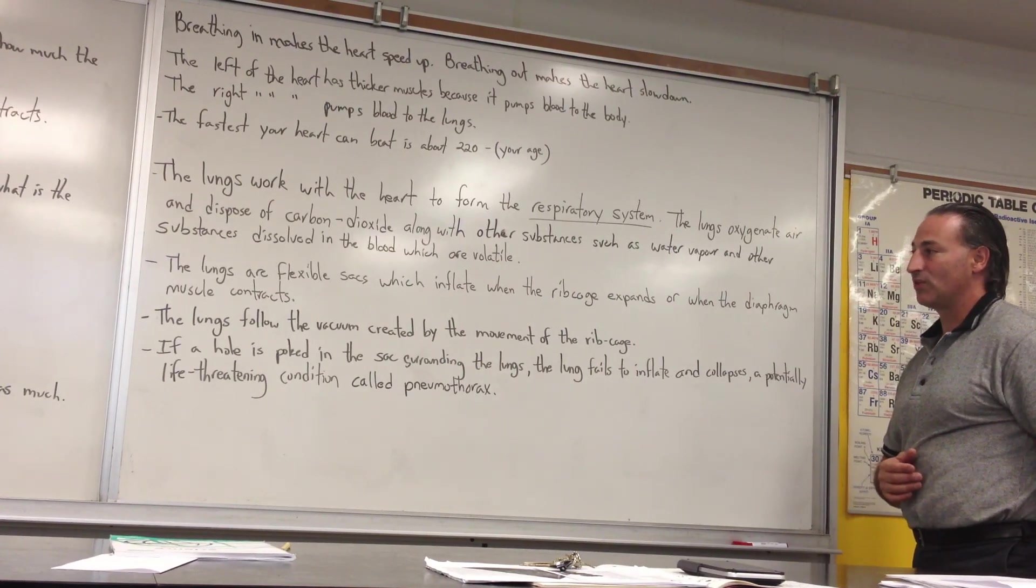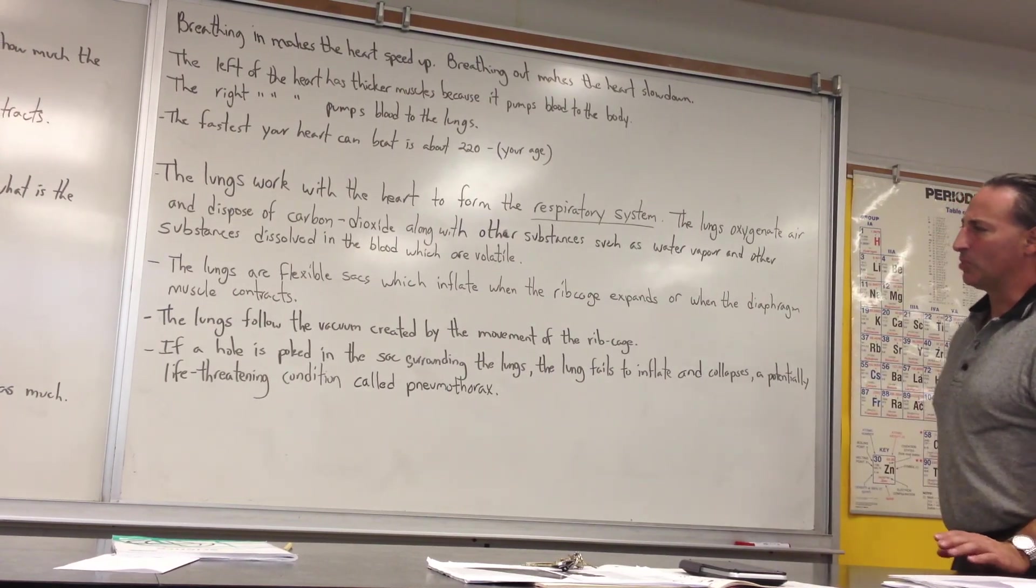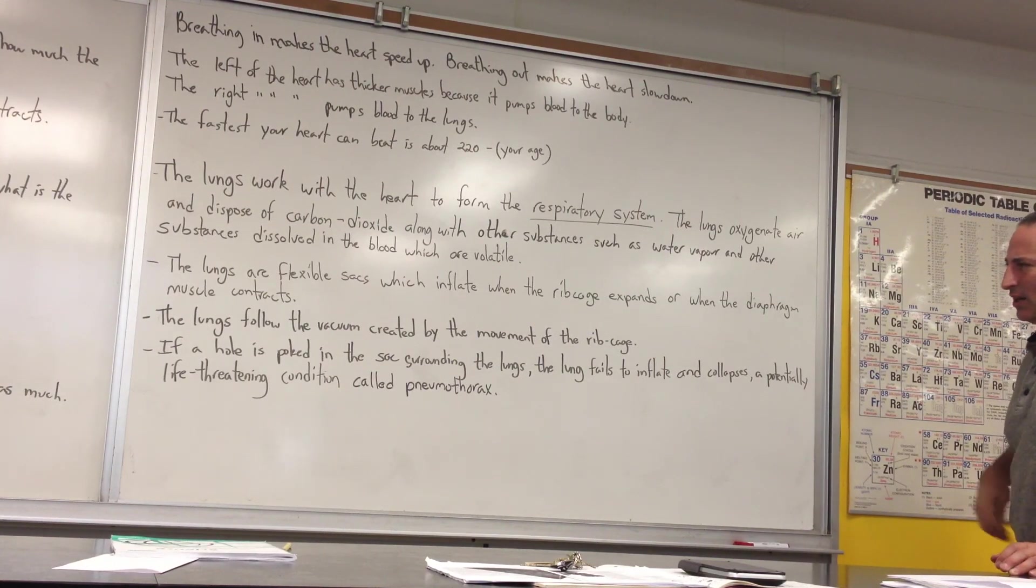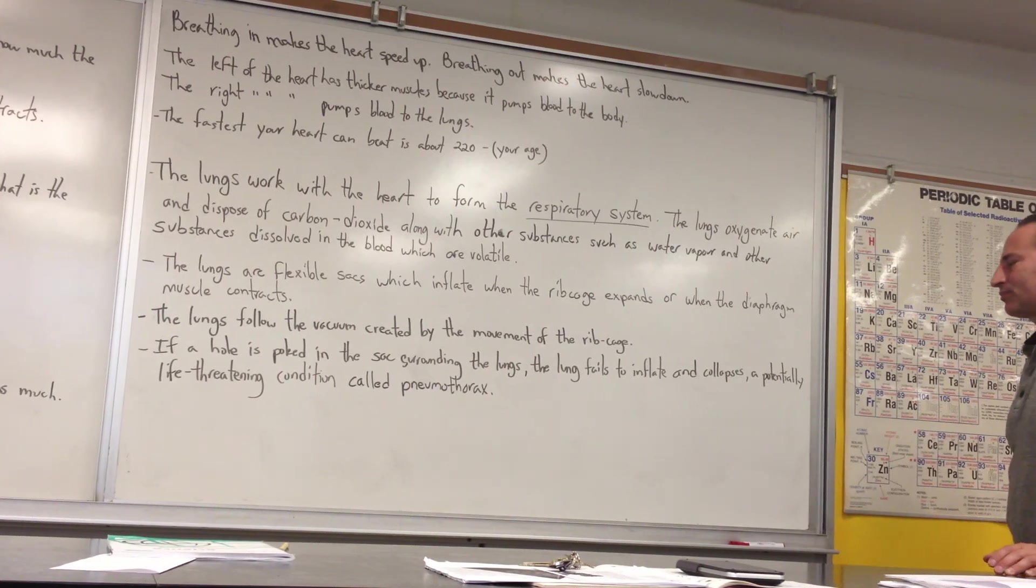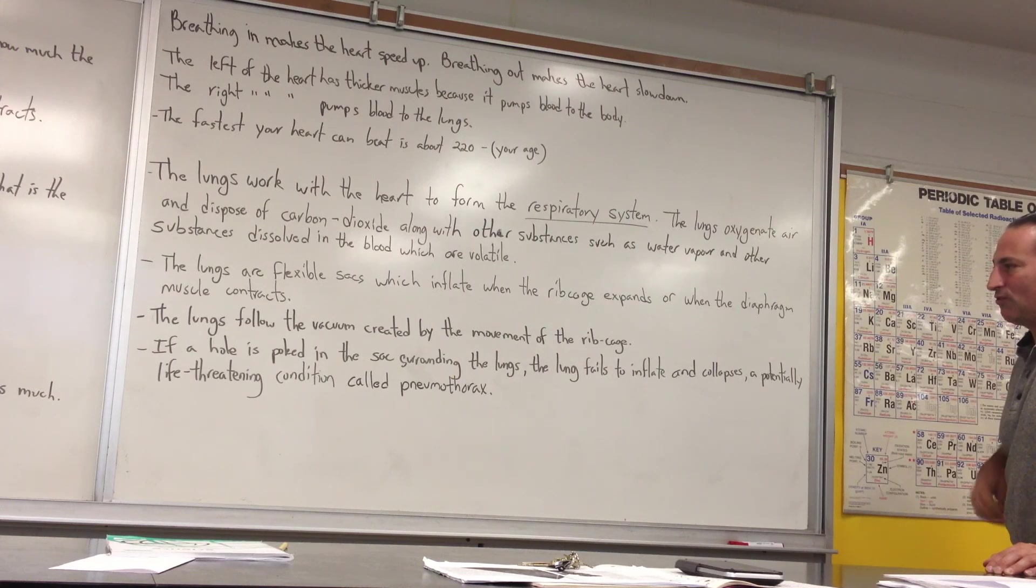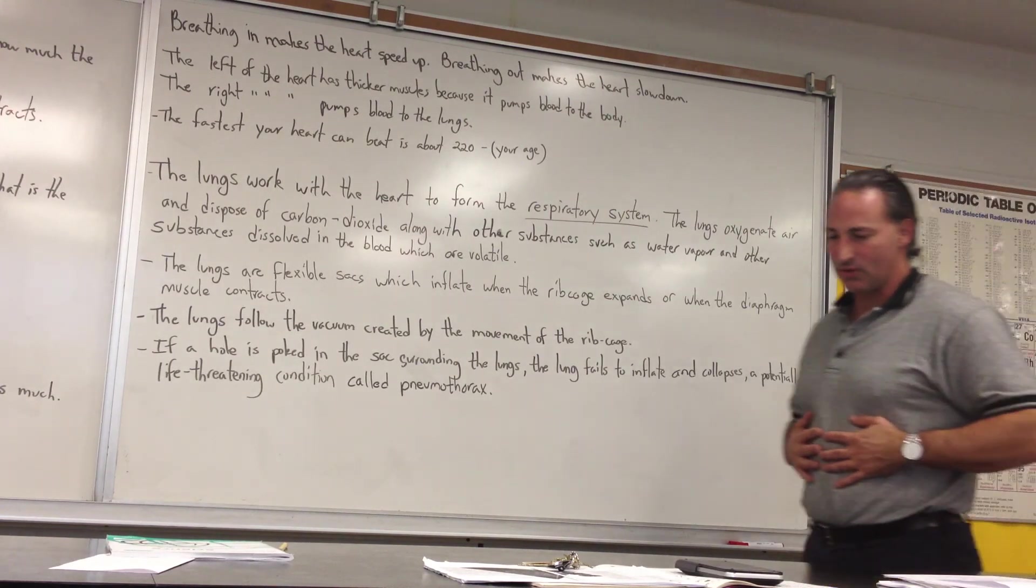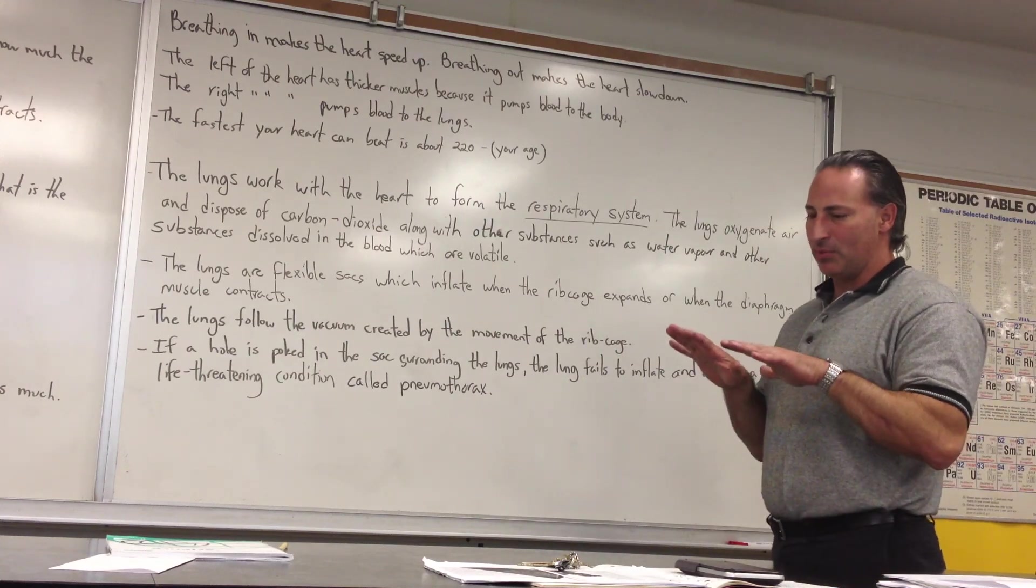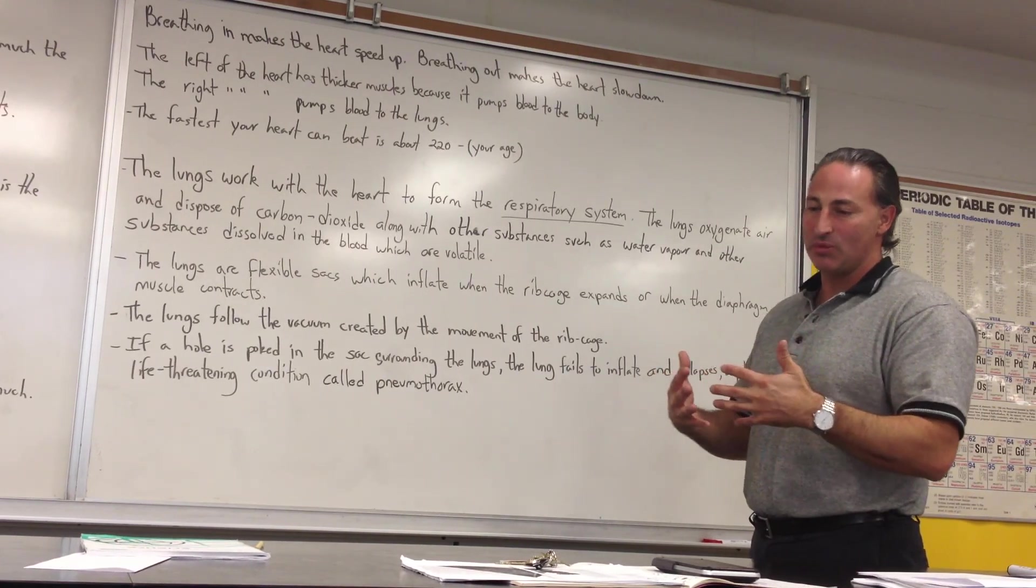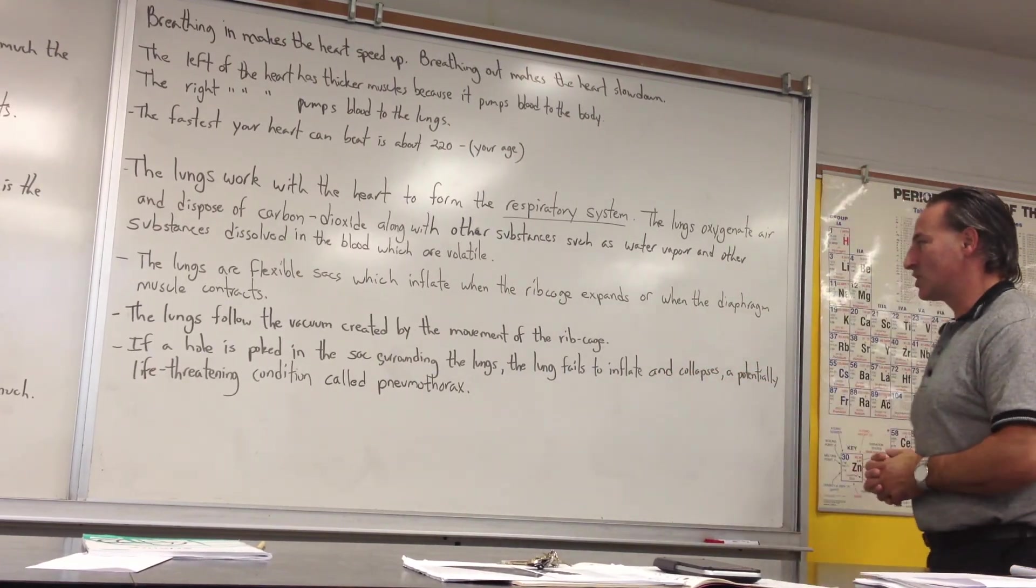The lungs are flexible sacs. They're sort of like balloons that can inflate. Mind you, they're not the texture of balloons. They have a kind of a textured surface with the ability to inflate, and they follow the ribcage. So, when the ribcage expands, you can think of the ribs as sort of hoops that tilt upwards, and when they tilt upwards, it increases the volume of the ribcage. The lungs follow the vacuum that is created when the ribcage expands.